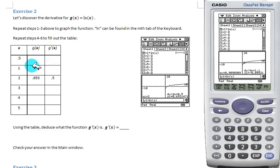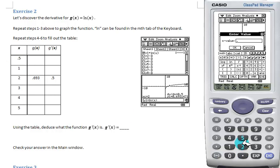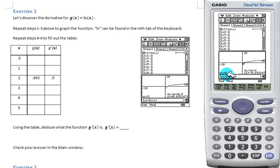Again, we can fill out our table by selecting the numbers. 0.5. Hit OK. And we get x value 0.5 has a y value of negative 0.693 and a slope of 2.